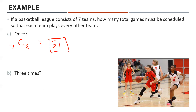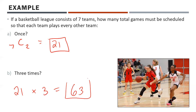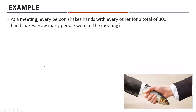What if every team plays each other three times? There are 21 games when each team plays once, so if they're all playing each other three times, it's just 21 times three — 63 games total.